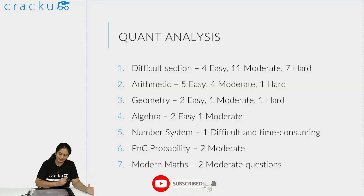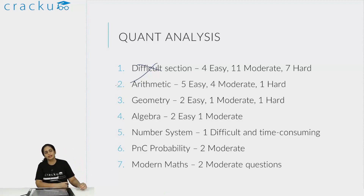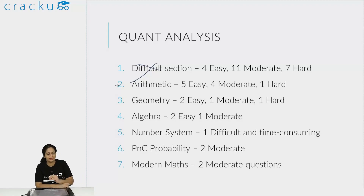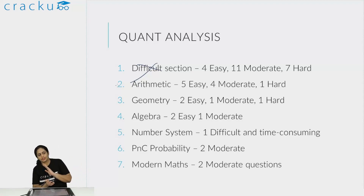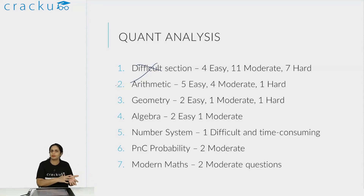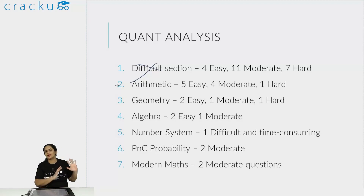Let's start with the quant analysis. This was not a difficult section - not easy either, but right at CAT difficulty level. If you had this kind of quant section in your slot, your slot marks are going to be graded down because all three slots will not be at this level. Between slots there are slightly difficult and slightly easier quant sections. Overall, there were 4 easy, 11 moderate, and 7 hard questions.